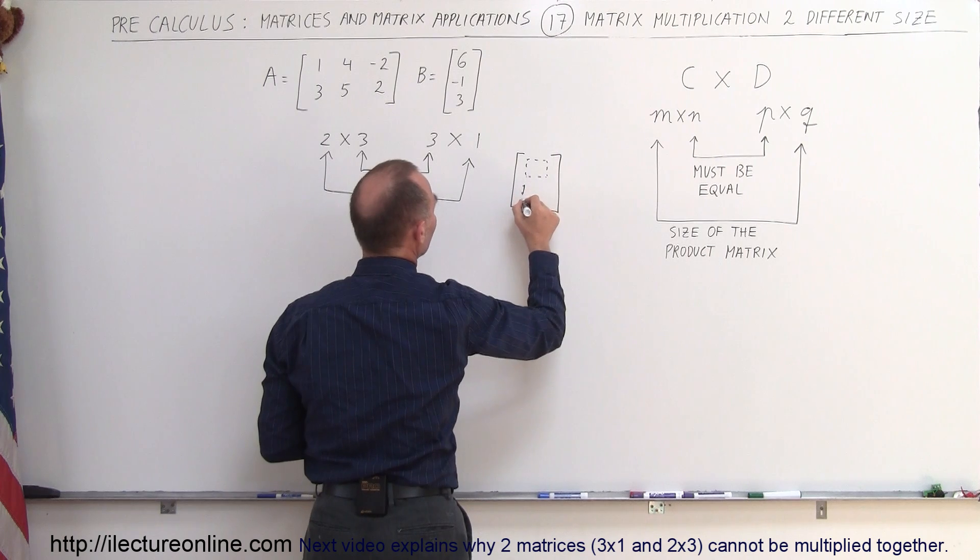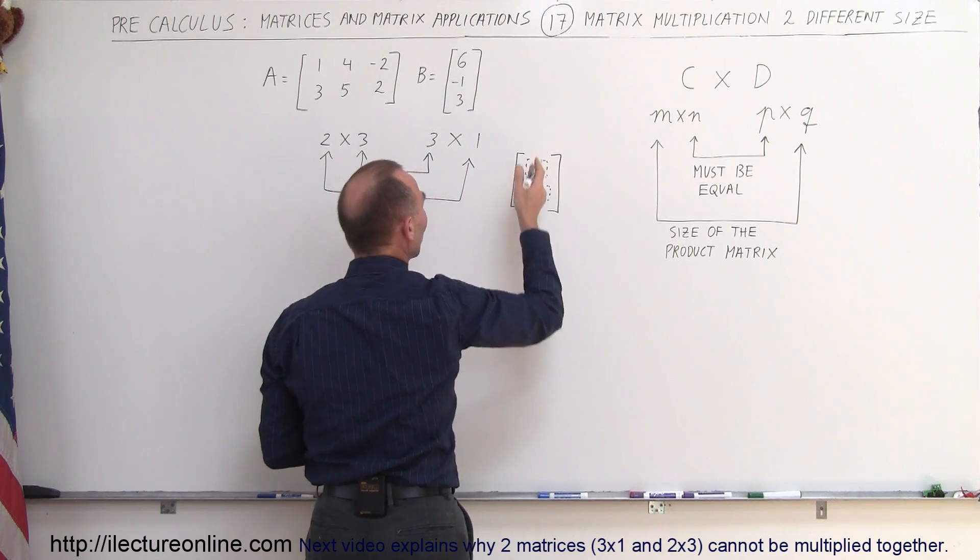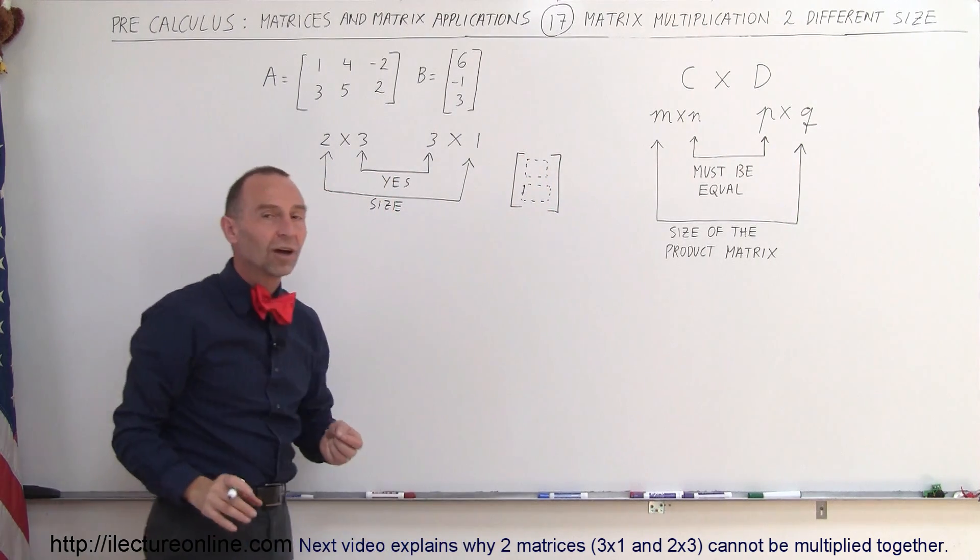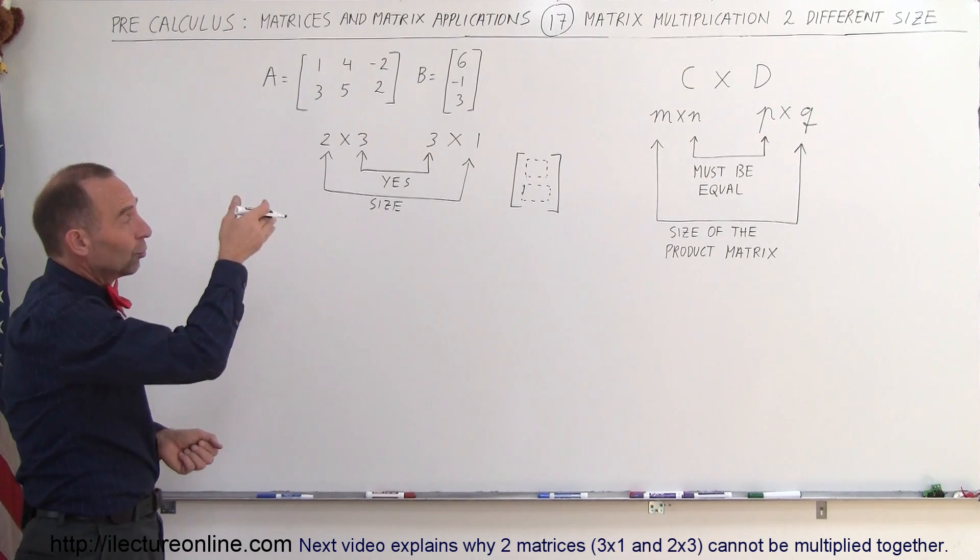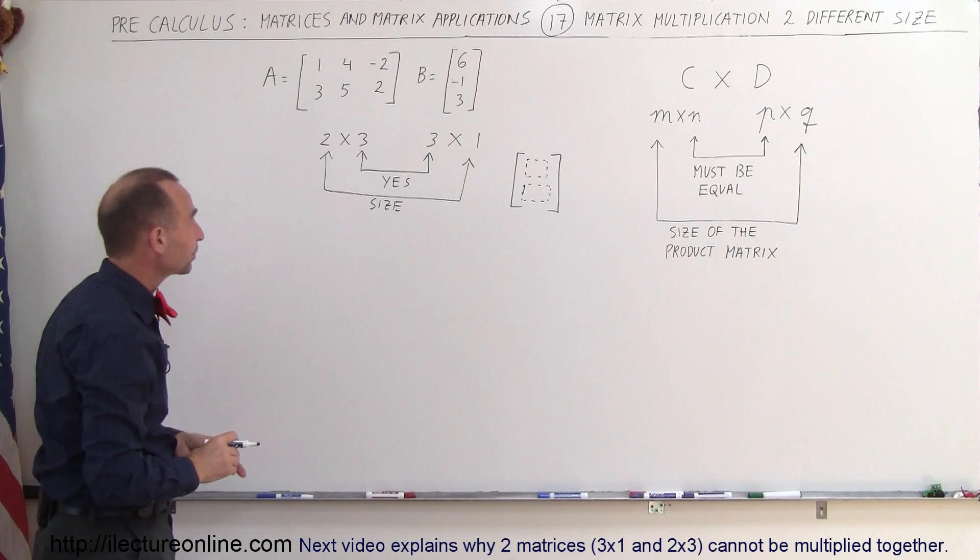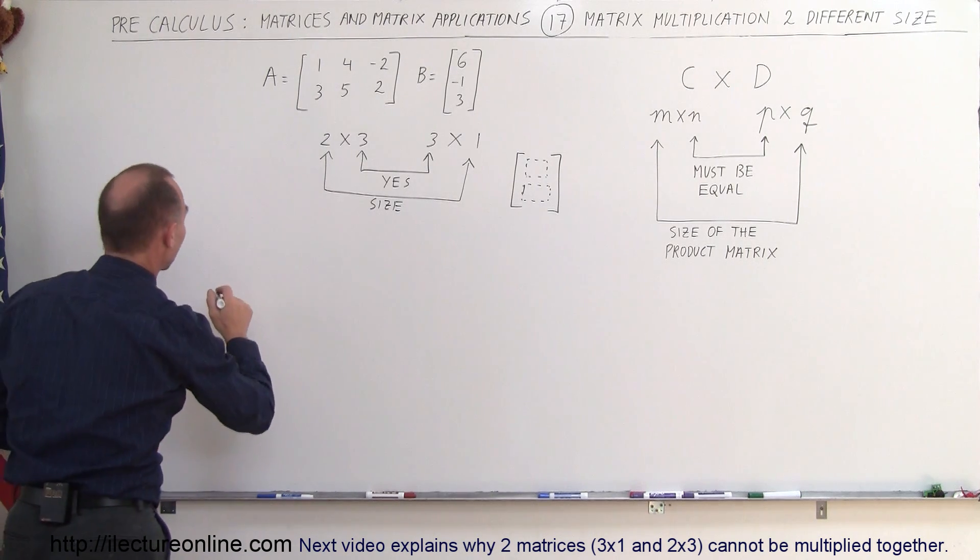So that will be the size of the resulting product matrix, you'll just have two elements, two rows, one column. All right, so how do we multiply these together?